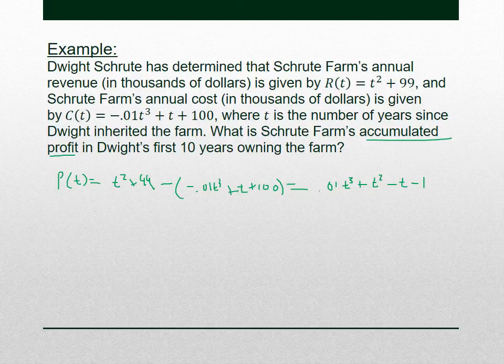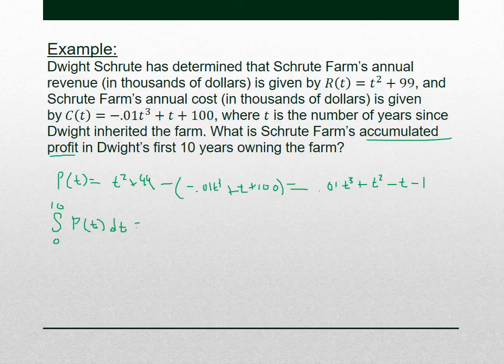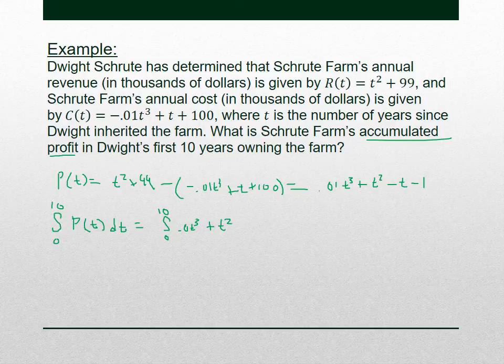If we want the accumulated profit in his first 10 years, we take the integral from 0 to 10 of this profit. Notice that this profit came out as a difference — revenue minus cost. It doesn't matter if you take the difference ahead of time and find the profit, or stick it in the integral and then simplify. The idea is just that we're integrating a difference. So that's the integral from 0 to 10 of 0.01T³ + T² − T − 1 dT.